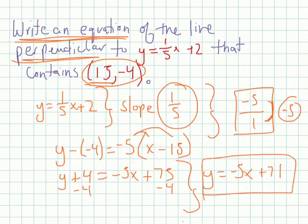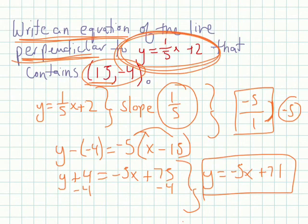Just to check: is our equation perpendicular? The slope negative 5 is the negative reciprocal of 1/5 — good. Does it contain the point (15, negative 4)? Yes — we built that in using point-slope form, then converted to slope-intercept. Good luck on your homework, and see you next time.